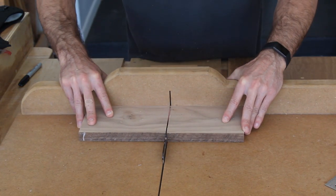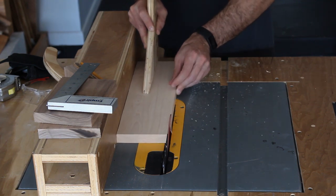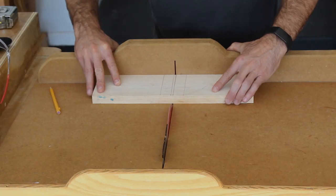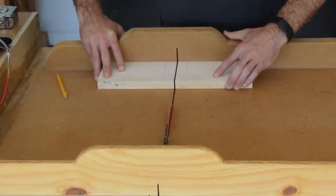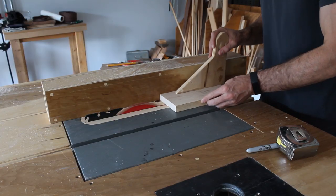The napkin holder will consist of four pieces: a base, two vertical walls, and then a weight that will hold the napkins down. I'll be using walnut and maple for this build.